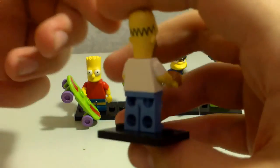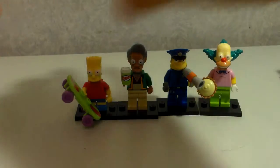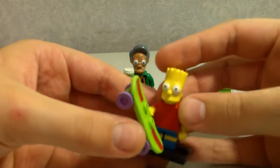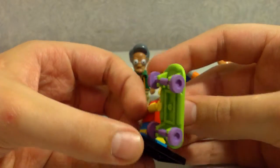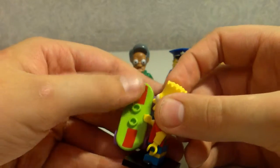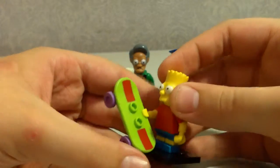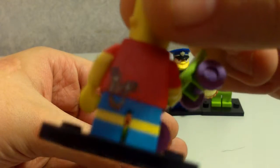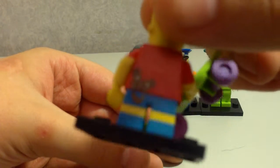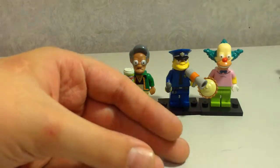We have Bart with his skateboard, very cool. This is printed as well on his skateboard, which is nice. He's got a little catapult, slingshot thing printed onto his back there, which is quite a nice touch.